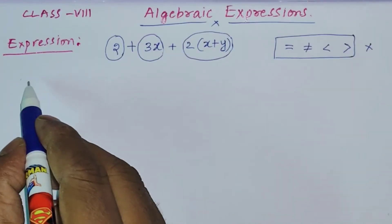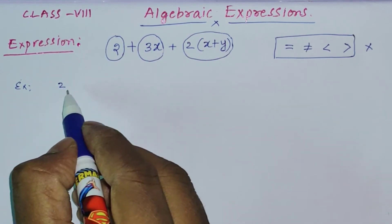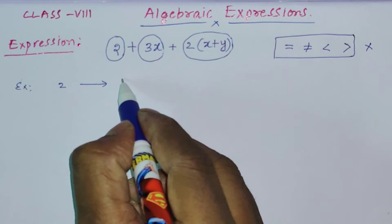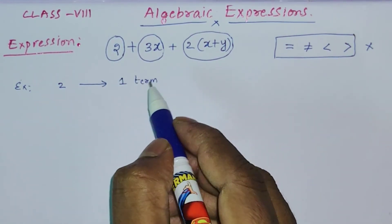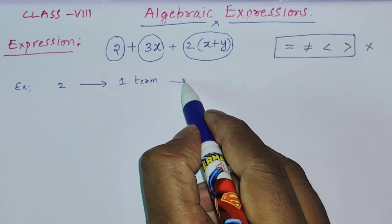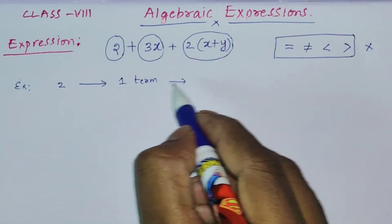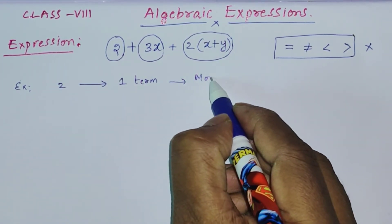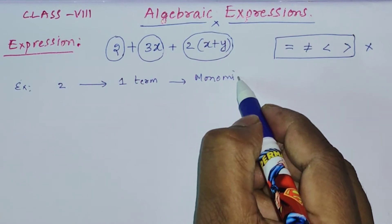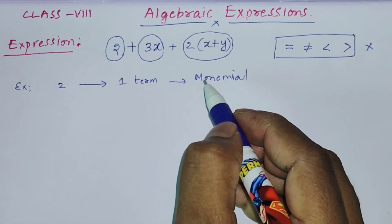Now I am going to write another expression. Here I have written just the number 2 — in this we have only one term. You can call it an expression, but since it has only one term it is called a monomial.